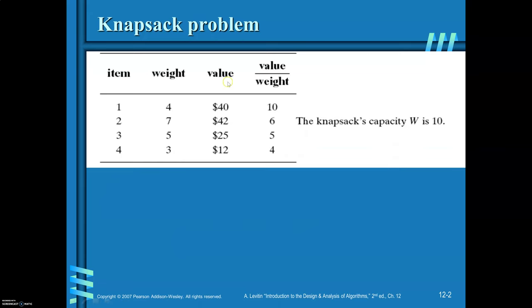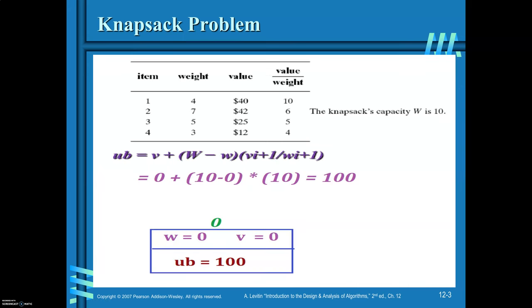This is the instance given to you. You are required to find out the solution by applying the branch and bound design technique. Notice that the value-to-weight ratio is already arranged in descending order, and you have four items. For all four items, the value-to-weight ratio has already been found and arranged in descending order. First, you are required to find out the upper bound.